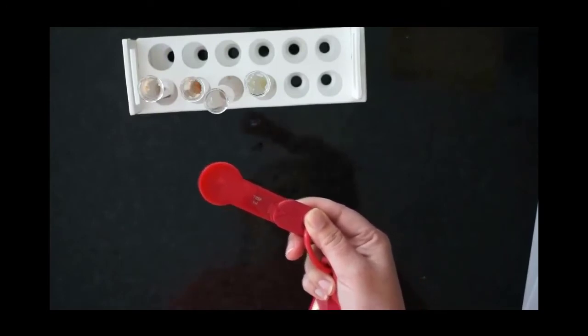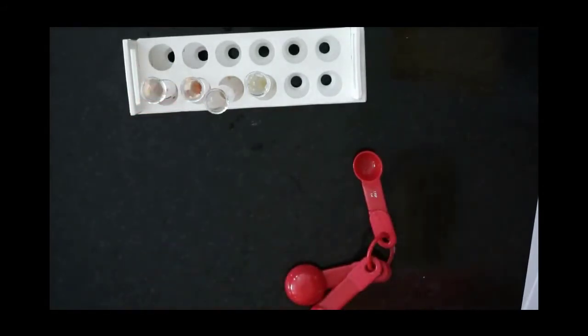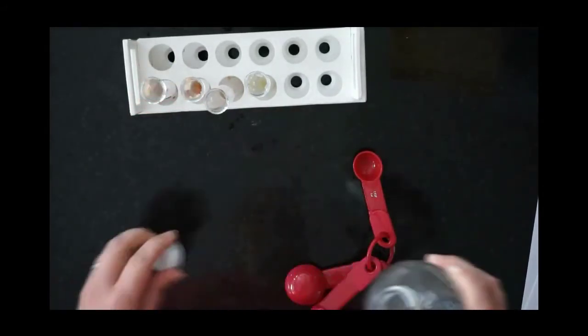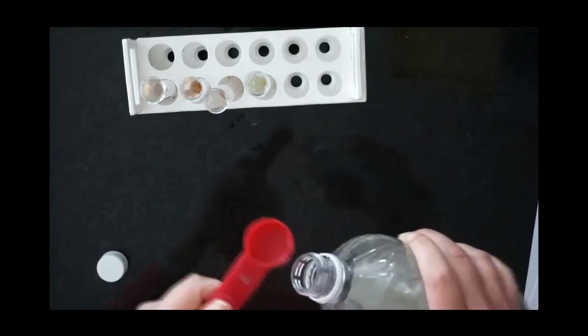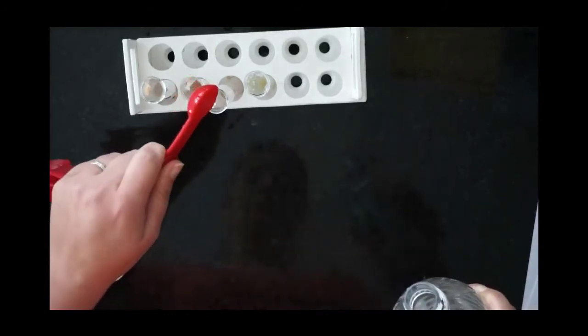As your directions tell you, we are adding one teaspoon of water to the first tube or cup, and one teaspoon of vinegar to the third tube or cup.